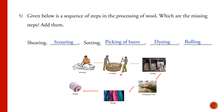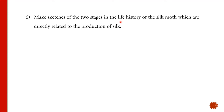Shearing is the first step — removing the hair and skin of the sheep. Scouring follows, where the wool is cleaned to remove dirt and dust. In sorting, different types of wool are separated depending on their texture. Picking of the burr means removing small fluffy hairs called burrs from the wool. Dyeing gives the preferred color to the wool. Finally, rolling means making the wool into a yarn by straightening it.